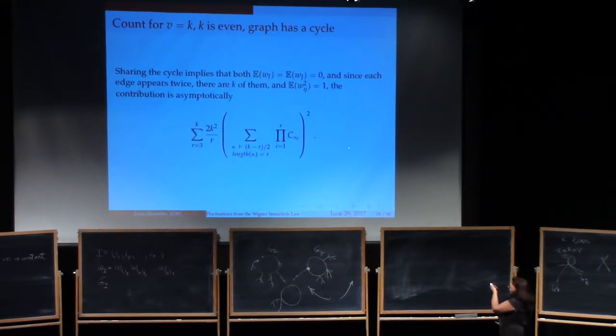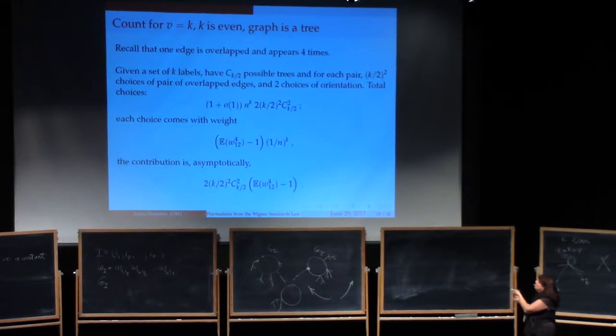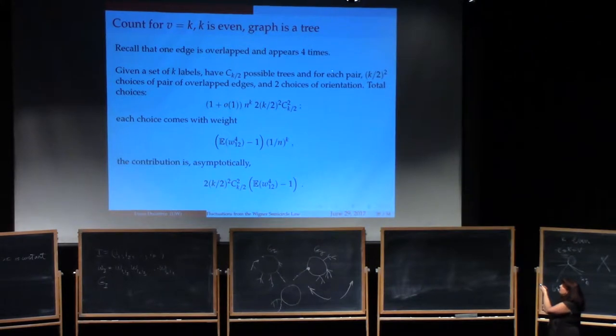Oh, sorry. I actually wanted to make one more point here. Since each edge is walked on twice, when you take the expectation, that variable is going to be squared. So you look at the expected value of a square of one of your variables. So that's always 1 because that's how the Wigner ensemble is defined. So that means that everything here has weight 1. So that's the count for having terms that come from cyclical graphs.